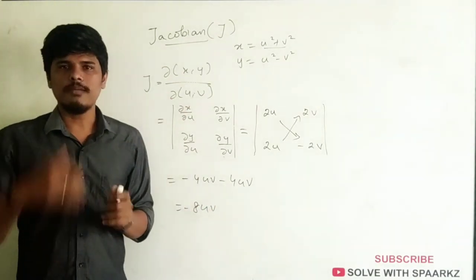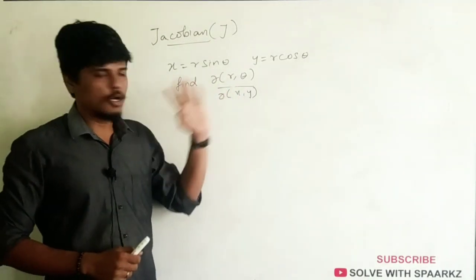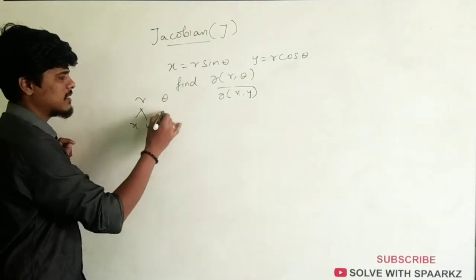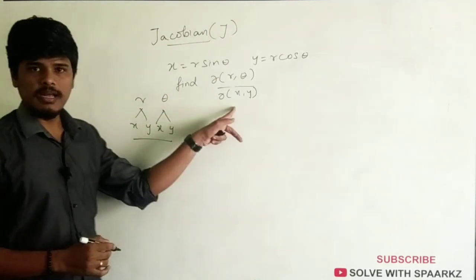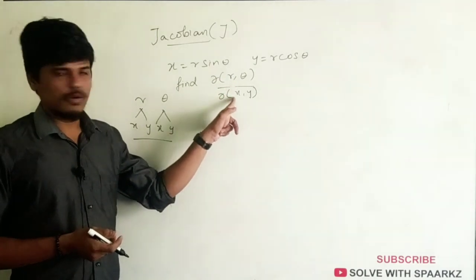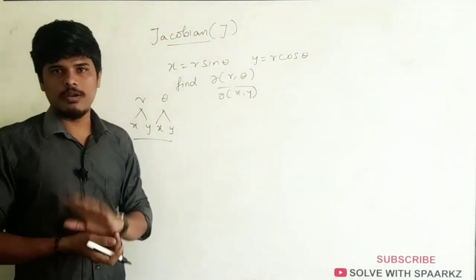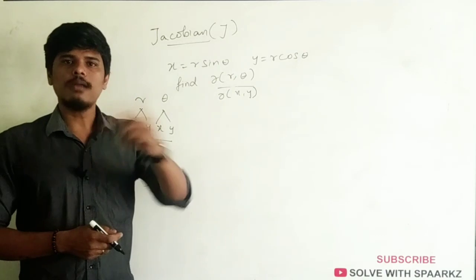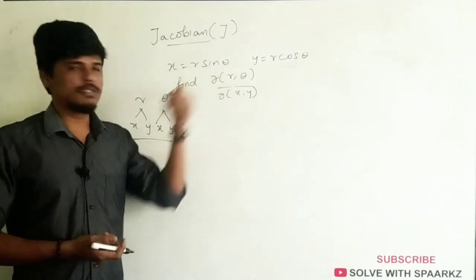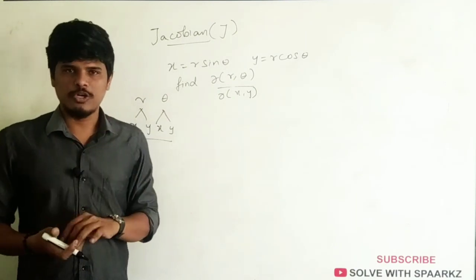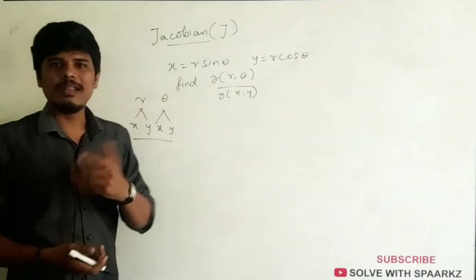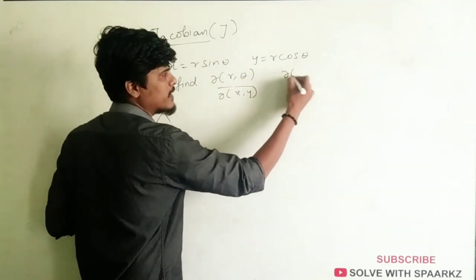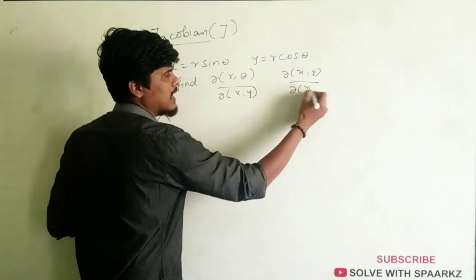Let's see a question here. If you ask doh R, Theta divided by doh X, Y — so R and Theta are functions of X, Y, and the variables are the same function. We can easily evaluate it using a formula. Jacobian has a property: if you want to find the reciprocal, just take the reciprocal of doh X, Y divided by doh R, Theta. Put it in the property — X, Y divided by R, Theta — and take the reciprocal.